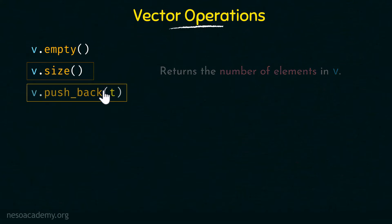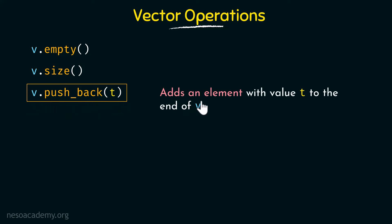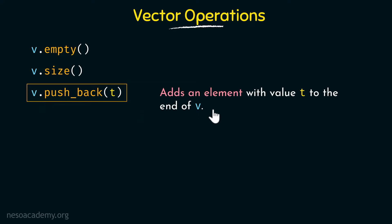Now coming to the next one, we have the push_back operation. This was something we already discussed in detail in the previous lecture — we will just recap it. This is basically going to add an element with the value t to the end of vector v, where the value is specified in the parentheses.